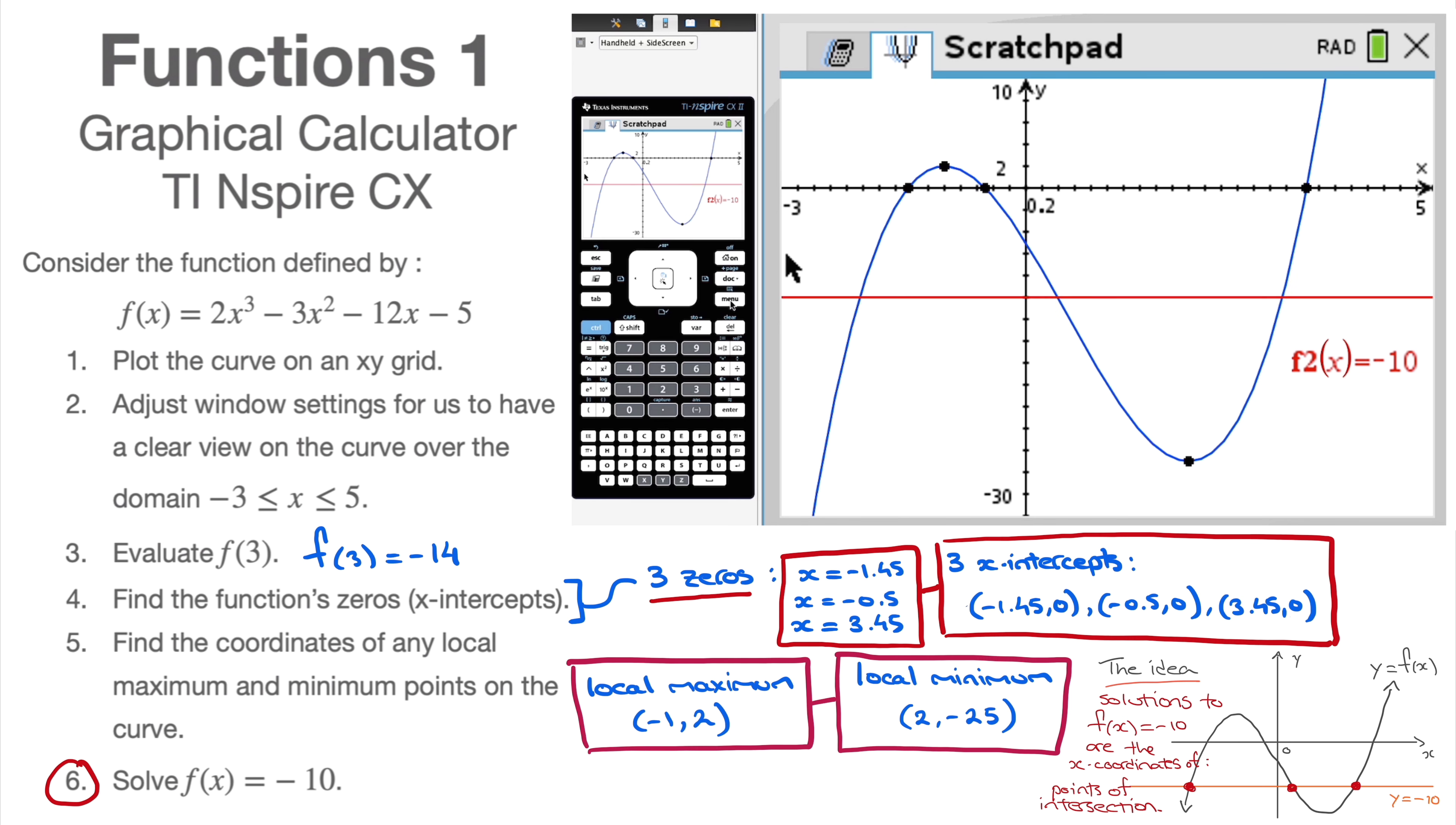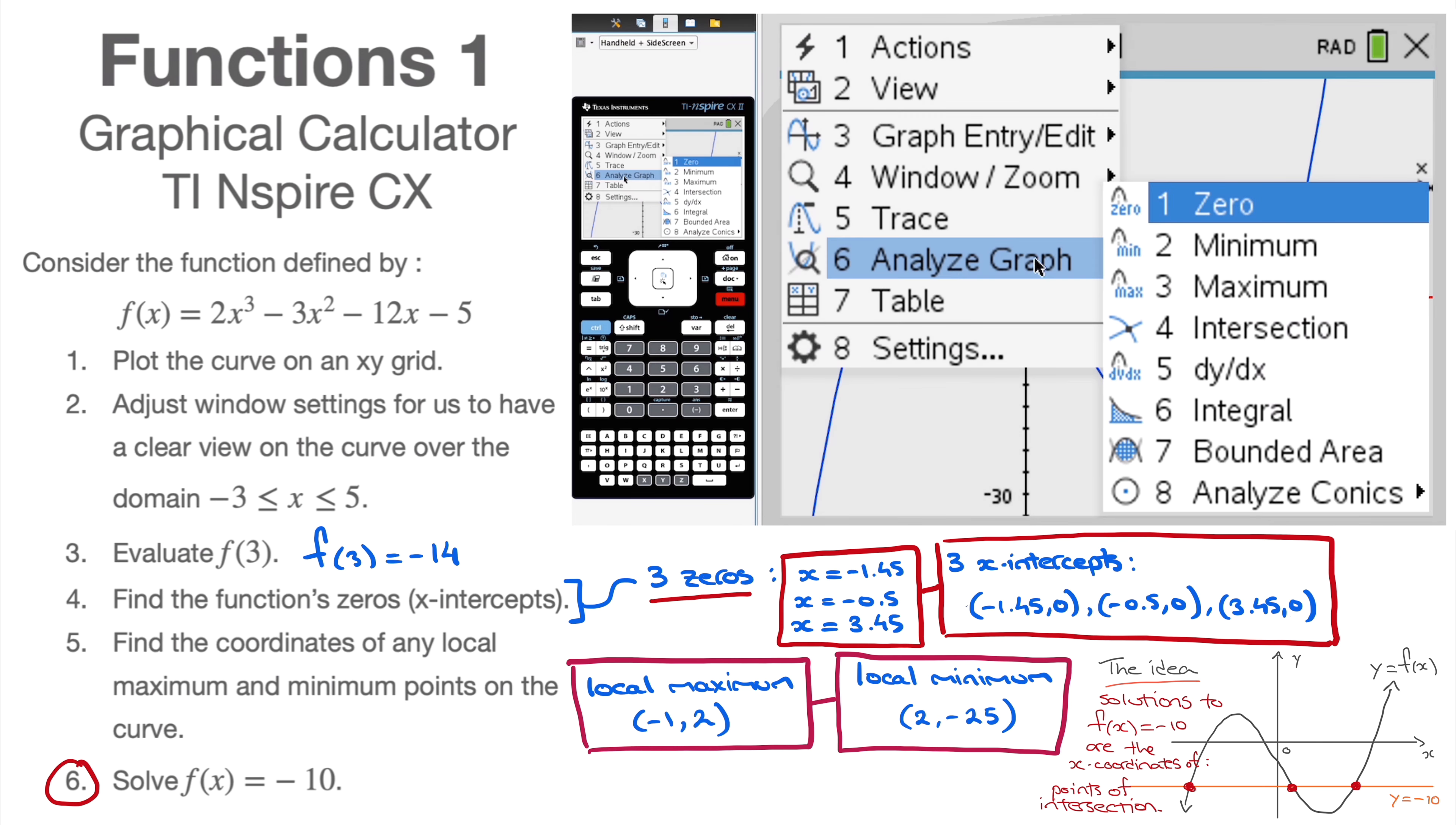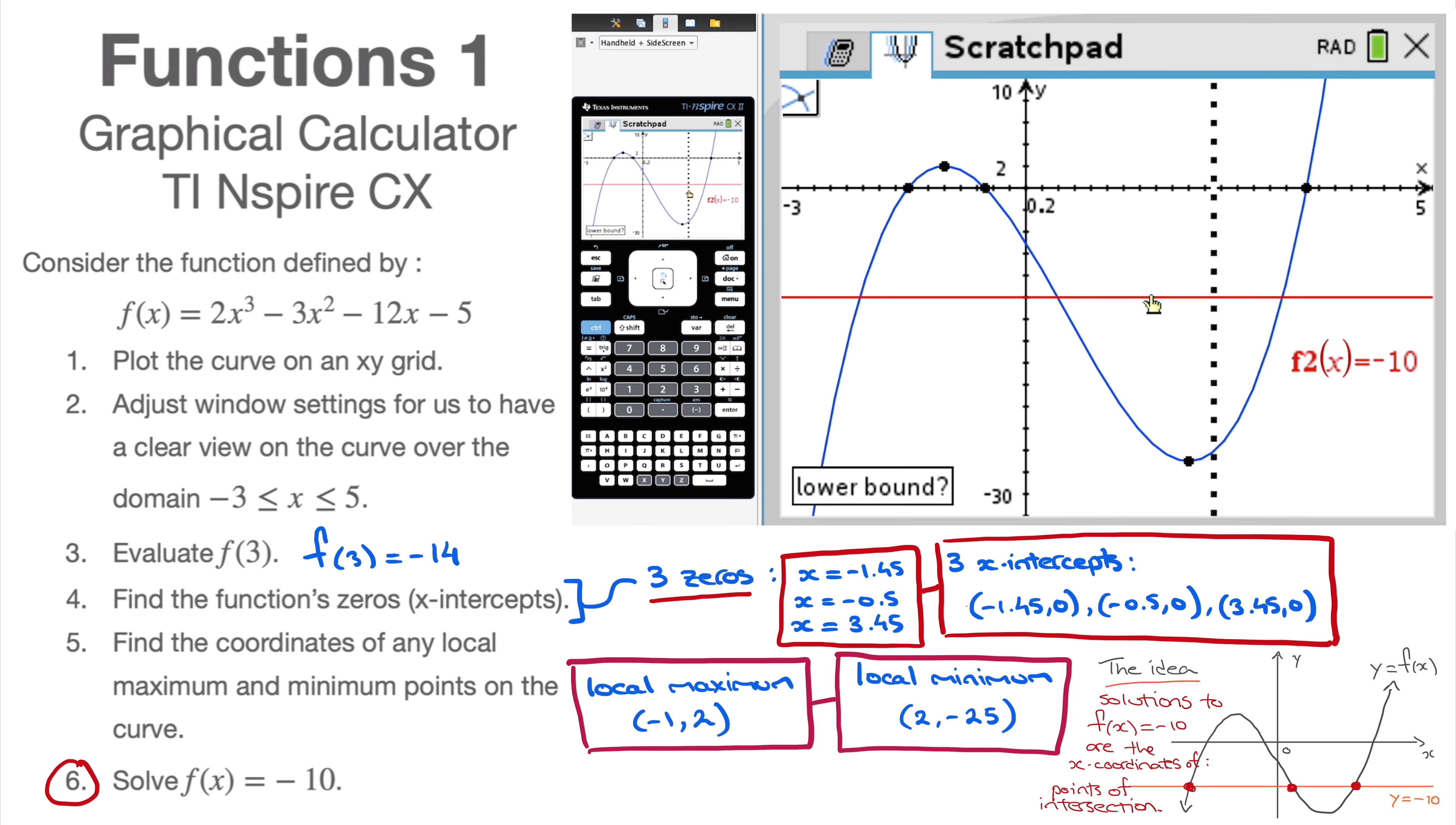To find them, I click on menu, analyze graph again, and the fourth option intersection. So I click on that. It always works the same way, lower bound, upper bound. So for this point of intersection, I go to the left, I click. It now asks me for an upper bound. I go to the right of it, I click. That's the first point of intersection. So the first solution to this equation would, in fact, be x = -2.04.